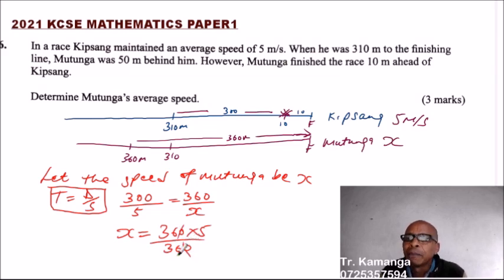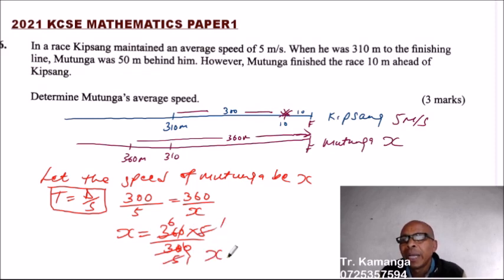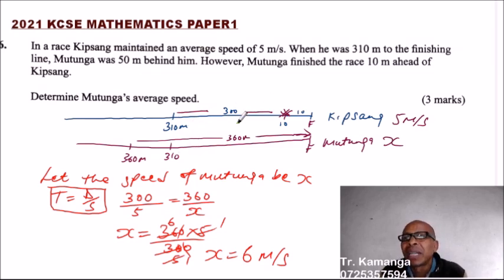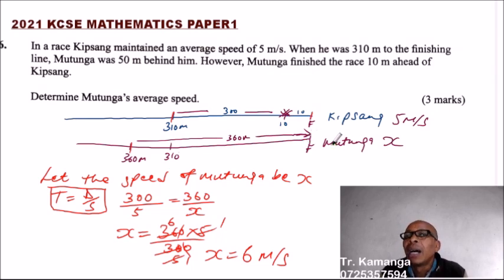Simplifying: 360 times 5 divided by 300. We can divide 300 and 360 by 60, giving 5 over 1, and divide 5 by 5 giving 1. So X equals 6. The speed of Mutunga is 6 meters per second. The key is identifying the correct distances — Mutunga covered 360 meters while Gipsang covered 300 meters — and using the speed formula to solve.